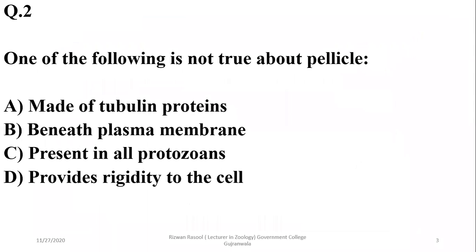Question two: which of the following is not true about the pellicle? The pellicle is made up of tubulin protein in Protozoa. It is found below the plasma membrane and provides some rigidity to the cell. However, it is not found in all protozoa. So the correct option is C.